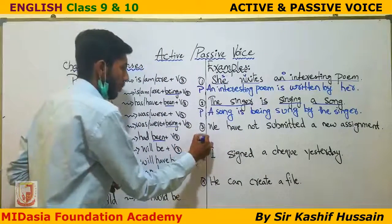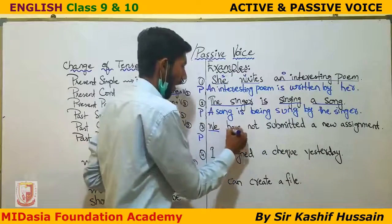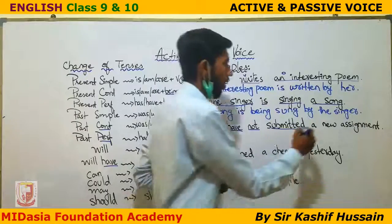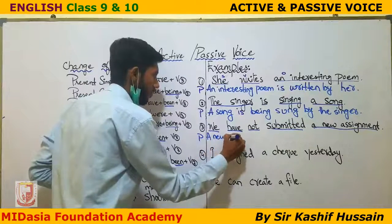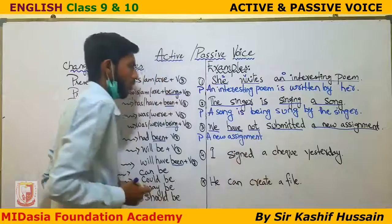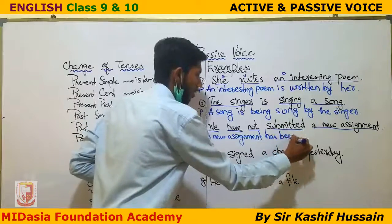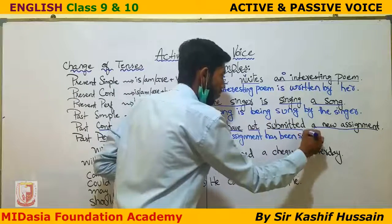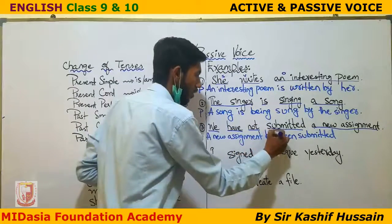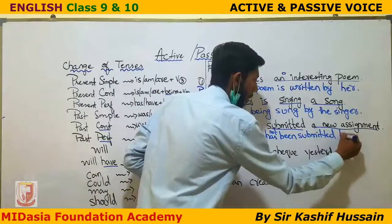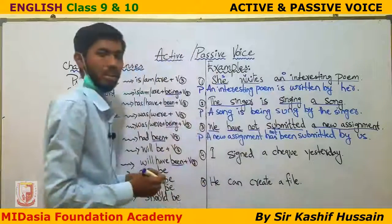Example 3: 'We have not submitted a new assignment.' Let's label it — 'we' is the subject, 'have' is the helping verb, 'submitted' is the verb in third form, and 'a new assignment' is the object. First, take the object: 'a new assignment.' This is present perfect tense, so we use 'has been.' The passive form is: 'A new assignment has not been submitted by us.' We change 'we' to 'us.'